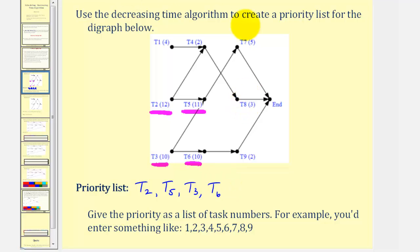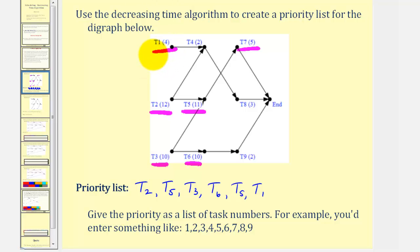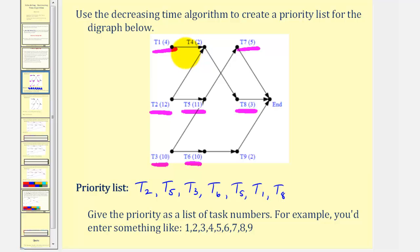Next we have task seven at five hours, followed by task one at four hours. That leaves task eight at three hours. Notice the last two tasks both take two hours — task four and task nine. Again, it's typical to list the task with the lowest number first, so we'll list task four followed by task nine.